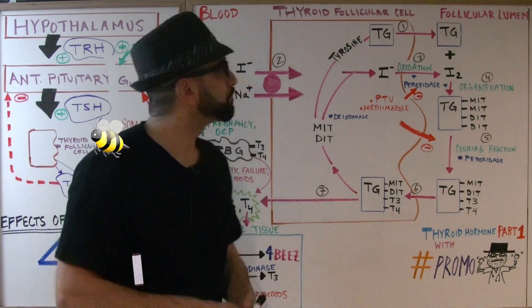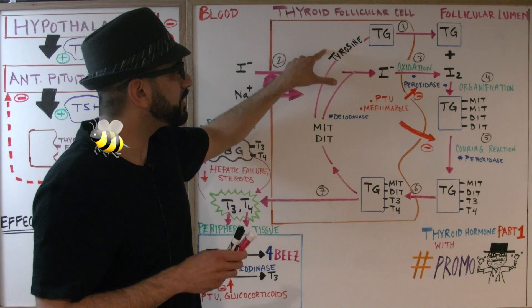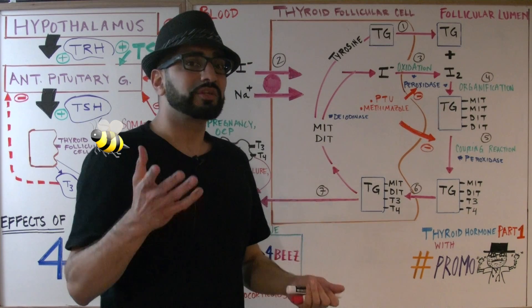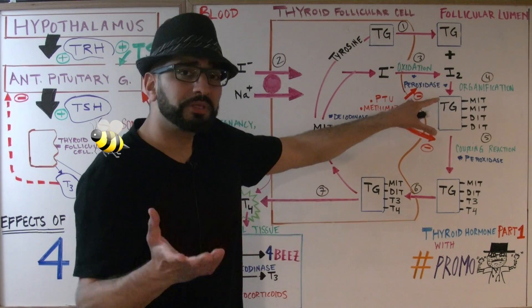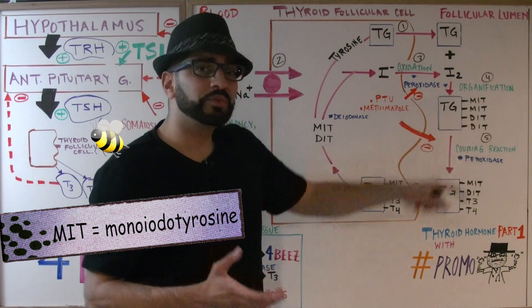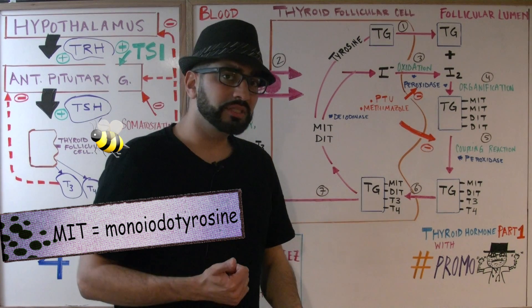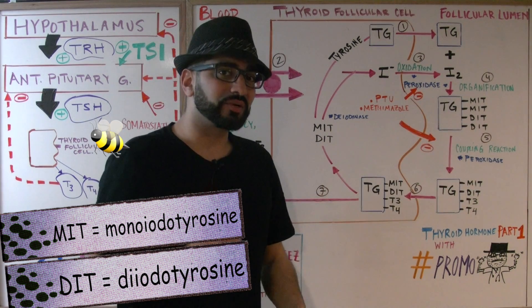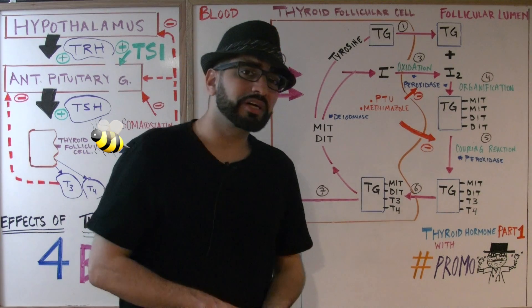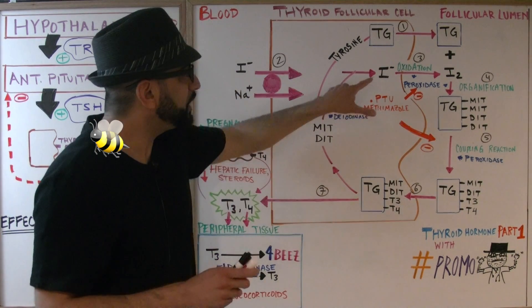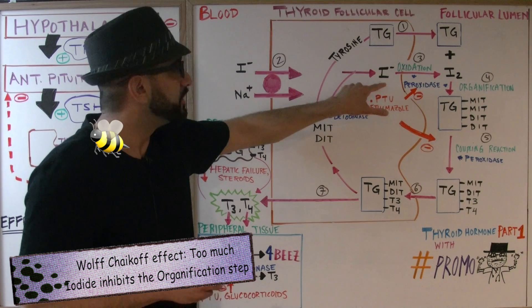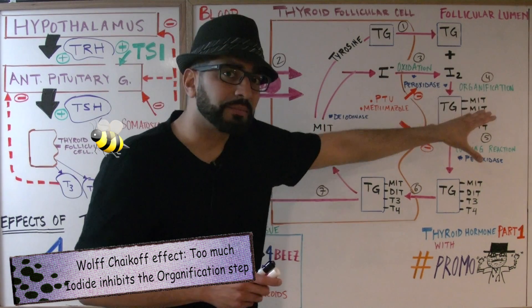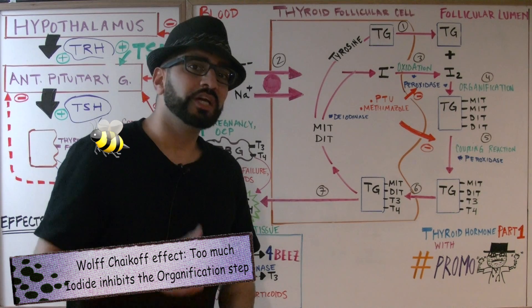What is organification? The tyrosine residue is reacting with the iodide and forming a couple of different molecules: MIT, which stands for monoiodotyrosine, and DIT, which stands for diiodotyrosine. An important concept: if we have too much iodide, it's actually going to inhibit this organification step.